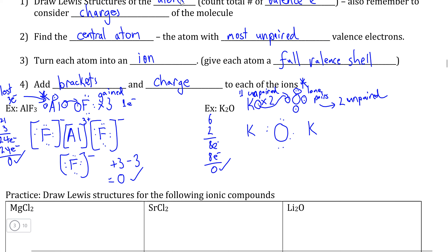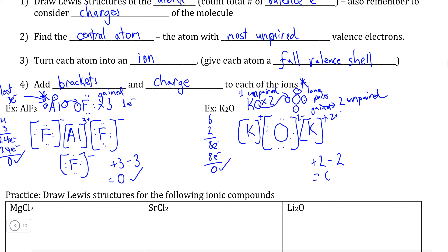With potassium oxide, we follow the same procedure. We add square brackets around oxygen, and because oxygen gained two electrons, that is a negative two charge. Each potassium gets square brackets, and because potassium lost one electron, that is a positive one charge. Checking the charges: positive two from the two potassiums minus two from oxygen gives an overall charge of zero, meaning the compound is neutral, and both Lewis structures are complete.